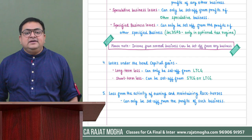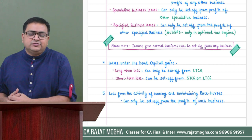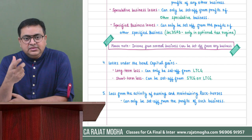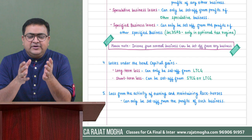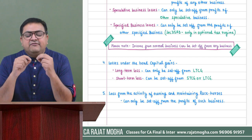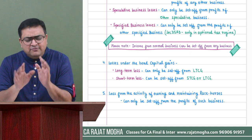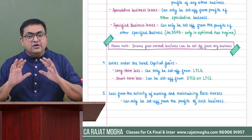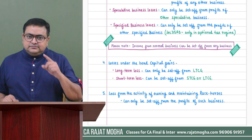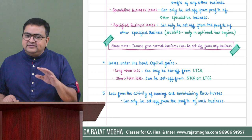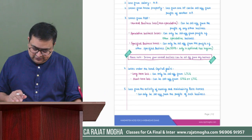The fifth category: if an assessee owns and maintains resources for horse races — a race horse establishment — such income is taxable under IFOS. Losses from such a race horse establishment can only be set off from income of another horse race establishment. That is intra-head set-off for this type.